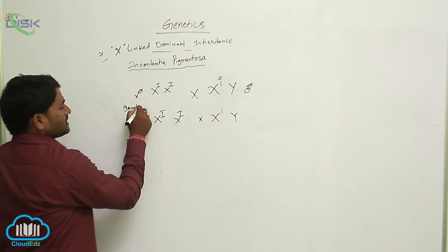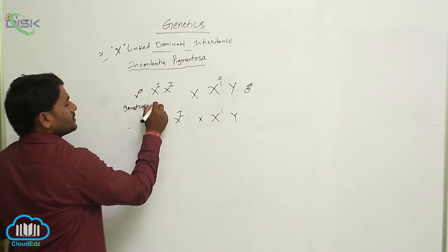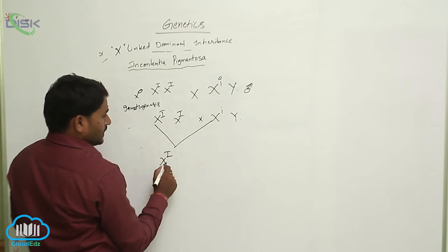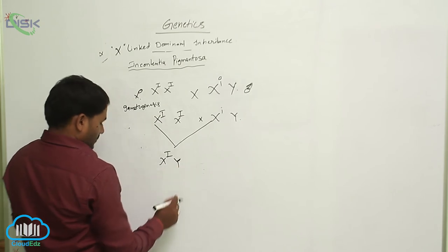This is called gametogenesis. What is this? Gametogenesis. When it happens, X^I and X.